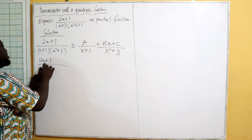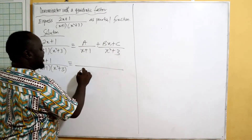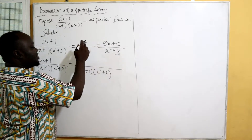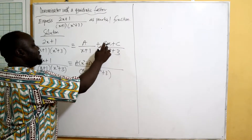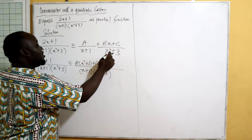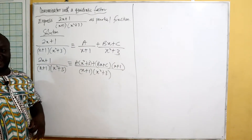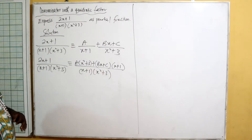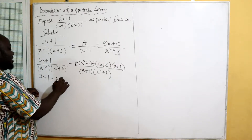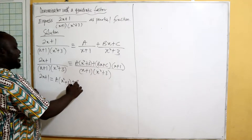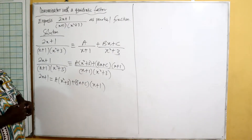Multiplying through by the LCM: a times x squared plus three, plus bx plus c times x plus one. Because the denominators are the same, the numerators are equal, so two x plus one equals a times x squared plus three, plus bx plus c times x plus one.